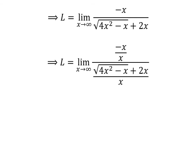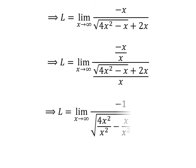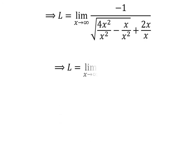Let us again multiply the numerator and the denominator by the common factor 1 upon x. In the numerator, we are left with minus 1 after cancelling out the common factor x. In the denominator, the expression becomes square root of 4 times square of x upon square of x, minus x upon square of x, plus 2 times x upon x. Cancelling out gives us L equal to the limit of minus 1 upon square root of 4 minus 1 upon x, plus 2, as x approaches infinity.